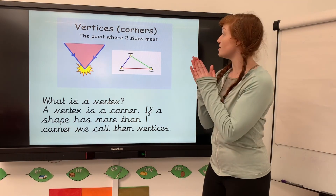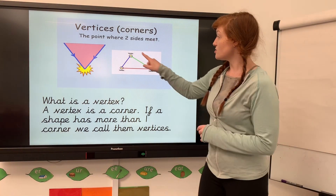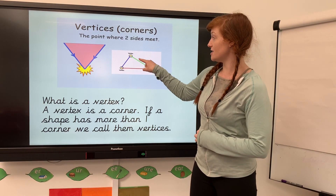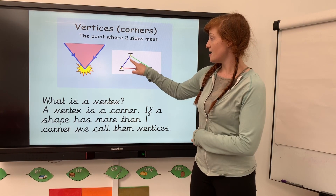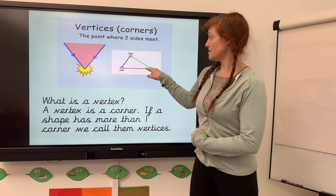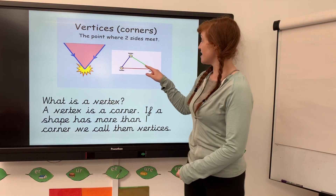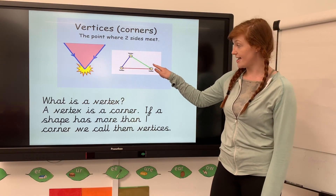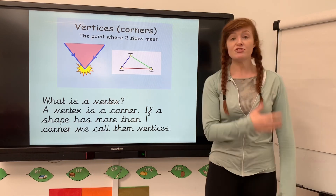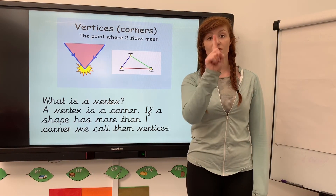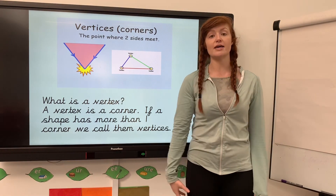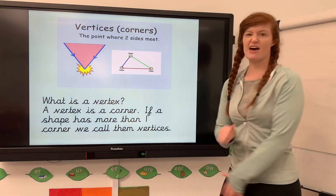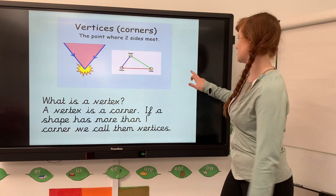Vertices are the same as corners - they join two sides together. You can see this blue side and the green side join to make a vertex; the blue side and the red side join to make a vertex; the red side and the green side join to make a vertex. If a shape has more than one vertex we call it vertices - it's plural - so it might have five vertices like a pentagon.